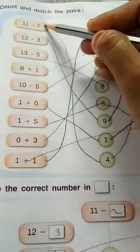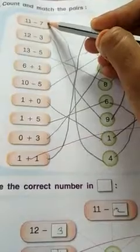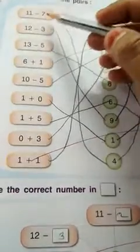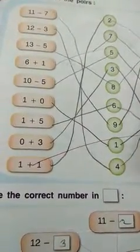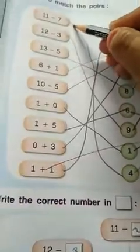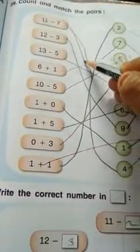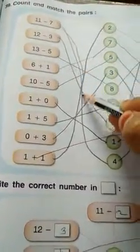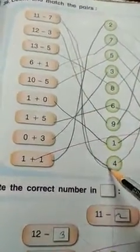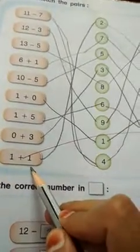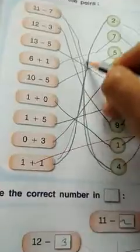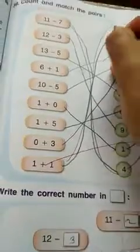Here is 11 minus 7. So where will we do the match? How many will we get from 11 minus 7? We count: 1, 1 plus which is 2? You will go up and do the matching.